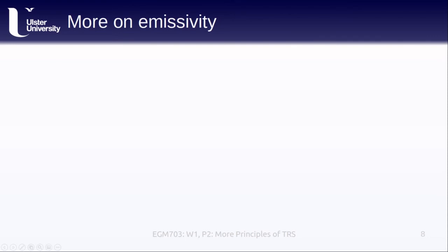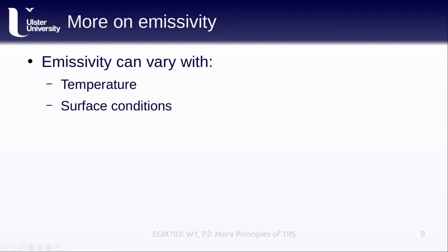In addition to wavelength, emissivity can also vary with the temperature of the object or the surface. Different surface conditions, like moisture content, for example, wet soil has a very different emissivity than dry soil does, as well as the viewing angle. This is often a very useful thing. For example, we can use this to help differentiate or distinguish objects or materials, especially if we have a sensor that has multiple channels in the thermal infrared.